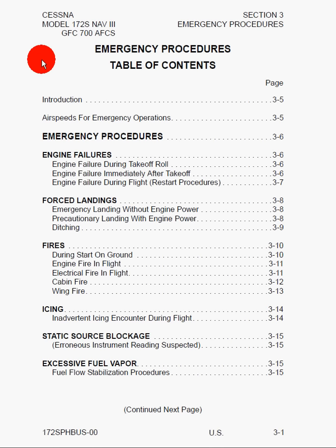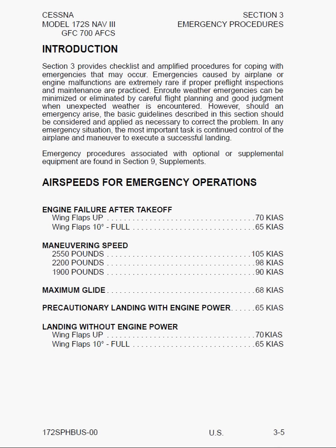Let's start off by looking at the table of contents, which comes first and tells us everything to be expected. Here we have the introduction, and it says Section 3 provides checklist and amplified procedures for coping with emergencies that may occur. Emergencies caused by airplane or engine malfunctions are extremely rare if proper pre-flight inspections and maintenance are practiced. En route, weather emergencies can be minimized or even eliminated by careful flight planning and good judgment when unexpected weather is encountered.